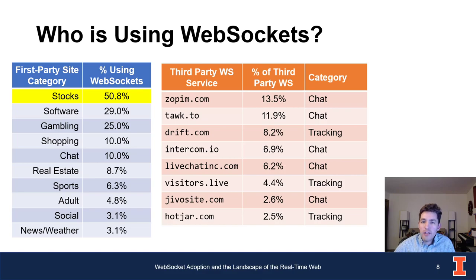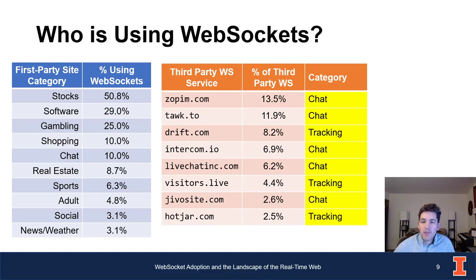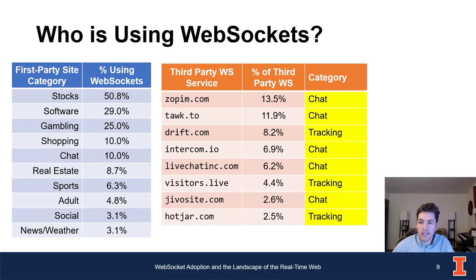The table on the right shows the most common third-party WebSocket services observed in our dataset. These are dominated by two main use cases: chat and tracking/analytics. Chat is the most common — many pages have a customer service chat that automatically pops up when you visit, and these are almost all implemented using WebSockets. Tracking also appears to be an industry that has really leveraged WebSockets to make its tools more efficient and less conspicuous.